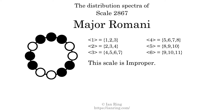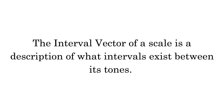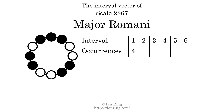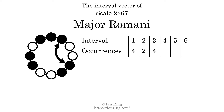Since the generic interval ranges overlap, this scale is an improper scale. The interval vector of a scale is a description of what intervals exist between its tones. There are 4 intervals with the size of 1 semitone — here, here, here, and here. There are 2 intervals with the size of 2 semitones — here and here. There are 4 intervals with the size of 3 semitones — here, here, here, and here.